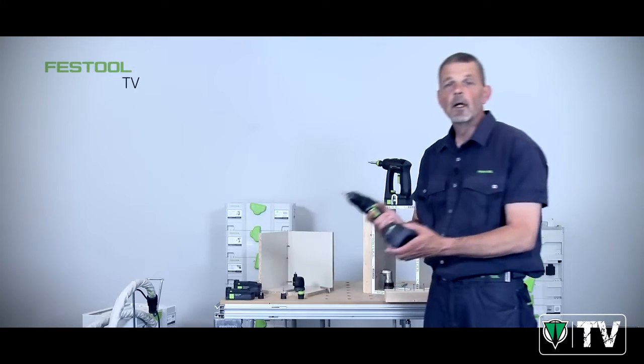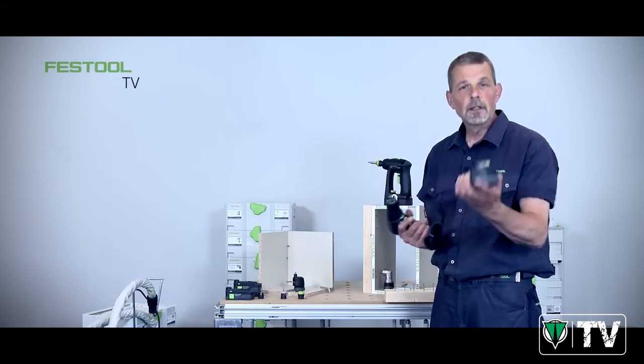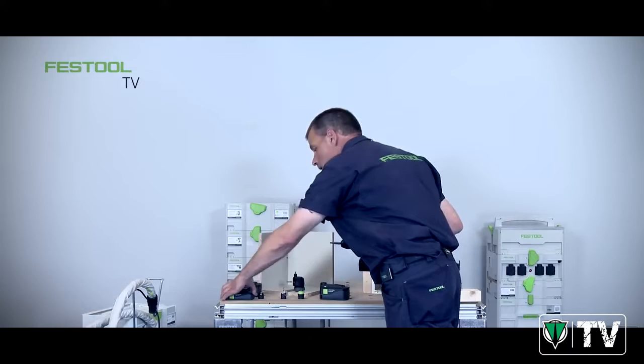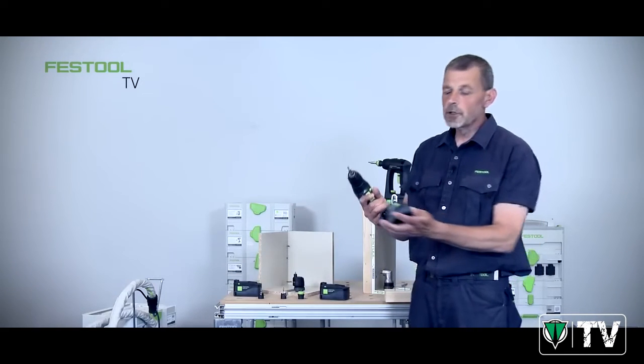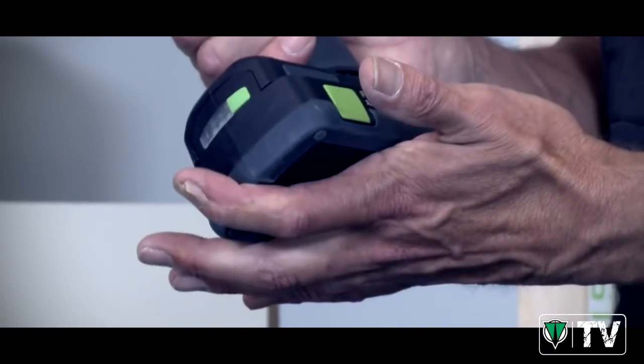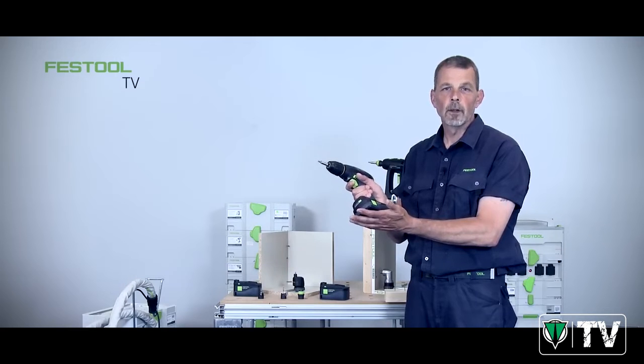Of course, if the machine is too heavy or you want a lighter load in your hands, take away the 5.2 and then we can work with a lighter machine all day long with the 3.1 compact battery as well.